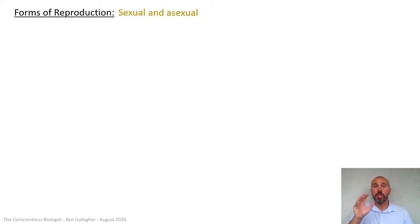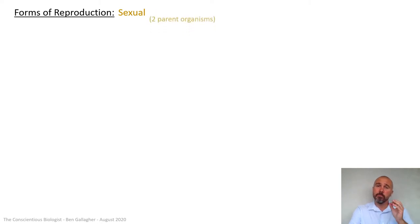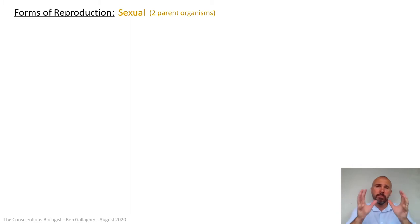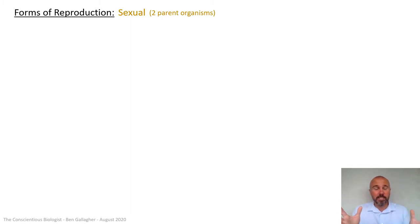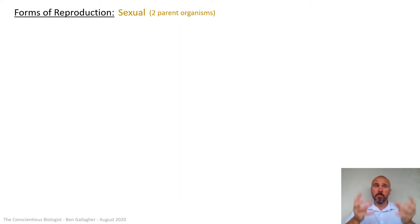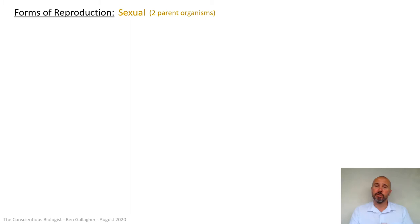There are two forms of reproduction: sexual and asexual. You should have already watched the asexual reproduction video, which is basically natural cloning involving only one parent. We're focusing now on the mechanism behind sexual reproduction, which involves two organisms. This isn't a sex education video — we're looking at sexual reproduction as a mechanism by which two organisms can create one new one, a blending of those two original ones.